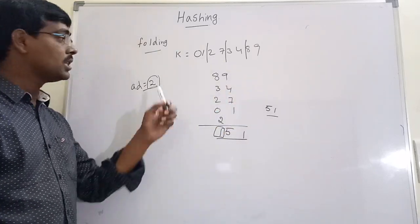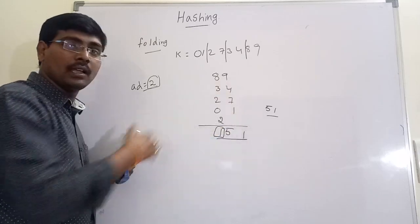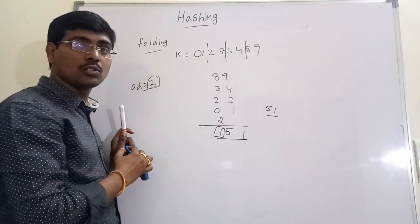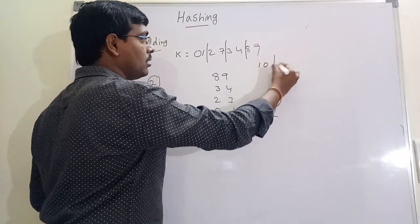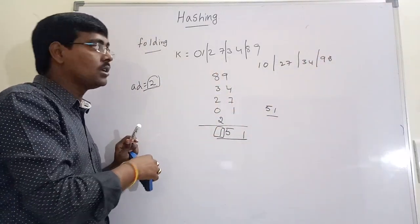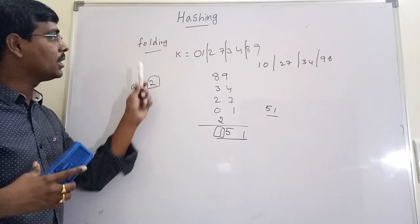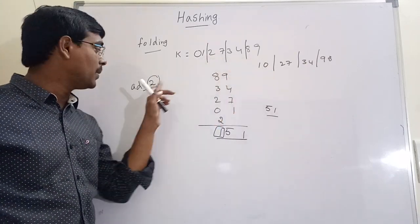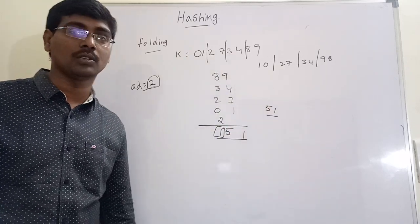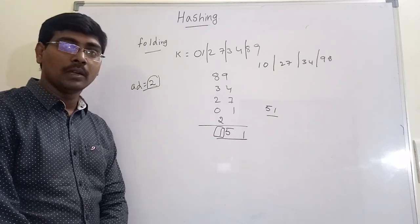This is the folding method. The folding method has different approaches — in one approach we add all the parts, and in another approach we shift only some positions. The main idea of folding is: divide the key into equal parts based on address width, perform addition, if any carry occurs ignore it, and place the result as the position.